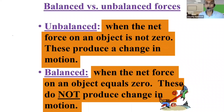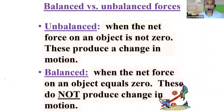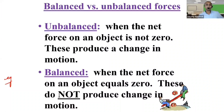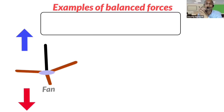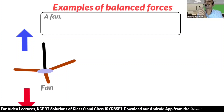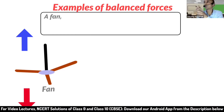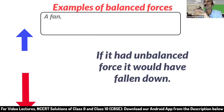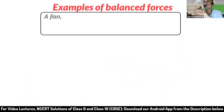Let's discuss a few examples of balanced forces around us. The first example: a fan. What keeps it balanced? If it were unbalanced, it would go down — it goes down because of unbalanced forces.